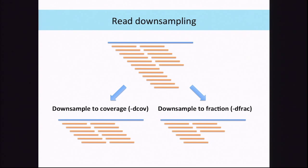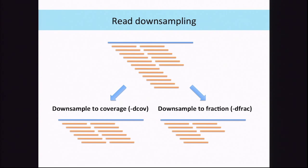One thing is read downsampling — when you have very deep coverage at some sites, this is a problem. Too much coverage means the tools can get stuck because there's just too much to process. Also, very deep coverage is often an indication of problematic mapping. So most of the tools will actually do downsampling by default, only running on a subset of the data. Usually most sites don't get downsampled, but this allows the program to run rationally through those deeper-covered areas.